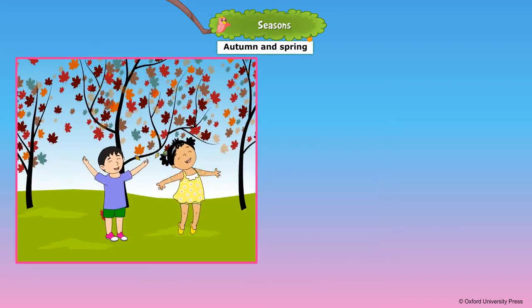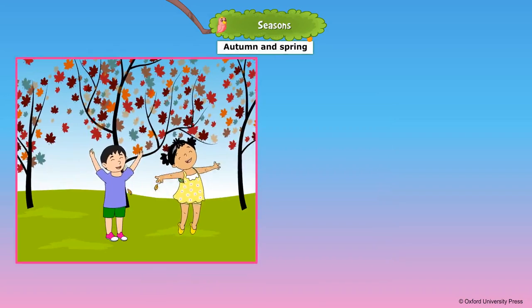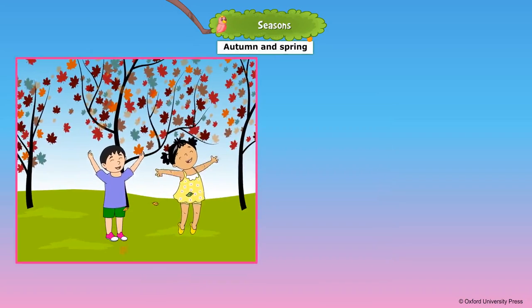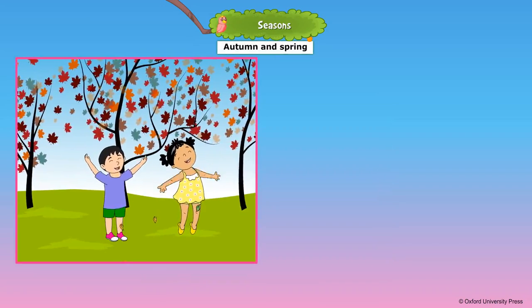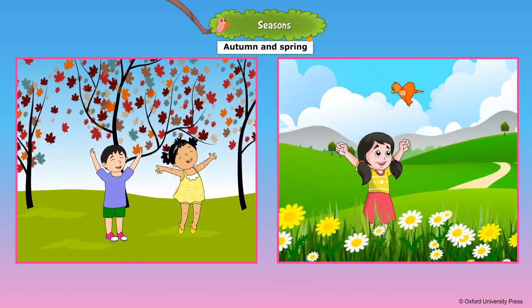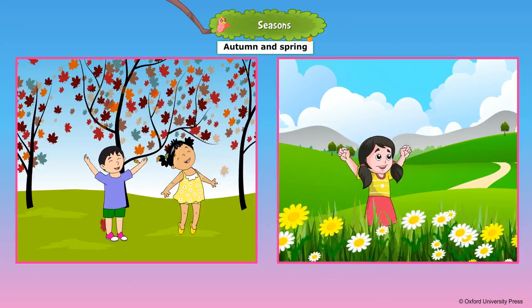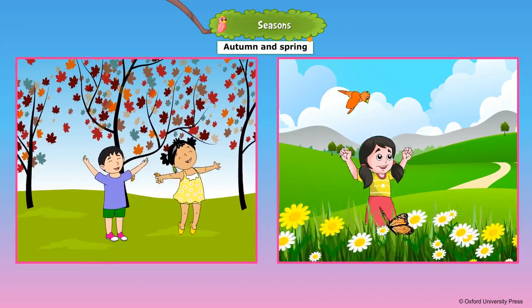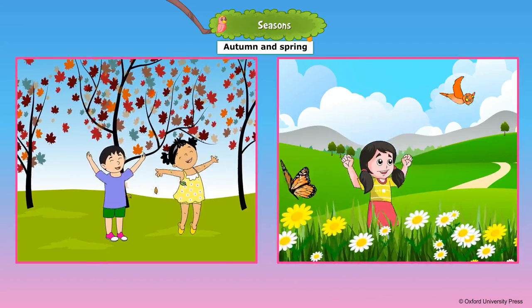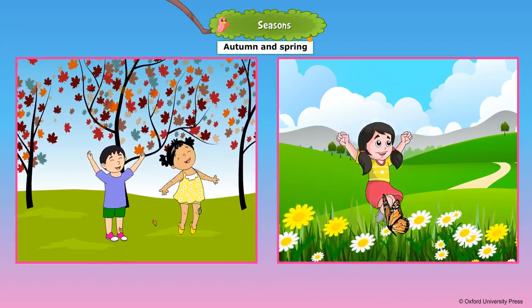In autumn, trees shed their leaves. The weather is neither too hot nor too cold. Spring comes between winter and summer. In spring, trees grow new leaves and flowers bloom.